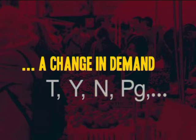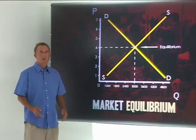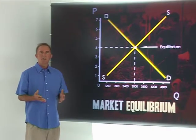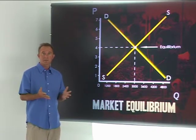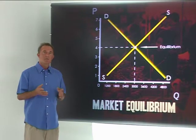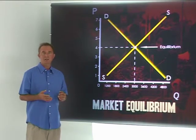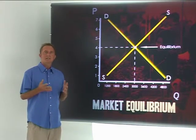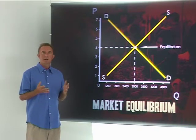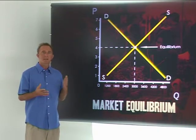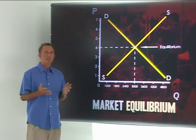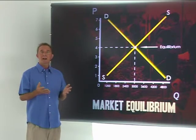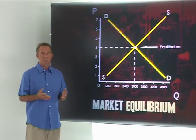Let's use our market for fried chicken pieces to analyse a change in demand. Our market for fried chicken consists of a demand curve showing the behaviour of consumers, and a supply curve representing the suppliers of fried chicken. Given these demand and supply curves, the market is in equilibrium at a price of 4 Rand per piece, where the quantity demanded and supplied is 3,000 pieces.